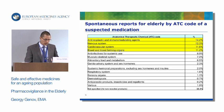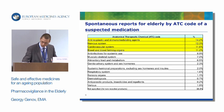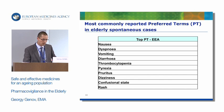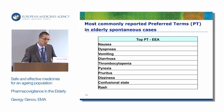Looking at the suspected medications reported for ADRs in elderly by ATC code, anti-neoplastic and immunomodulating agents are in first place, followed by nervous system, cardiovascular, blood and blood-forming organs, and others. The top 10 preferred medical terms for reports coming from the EU include nausea, dyspnea, vomiting, diarrhea, thrombocytopenia, pyrexia, pruritus, dizziness, confusional state, and rashes.